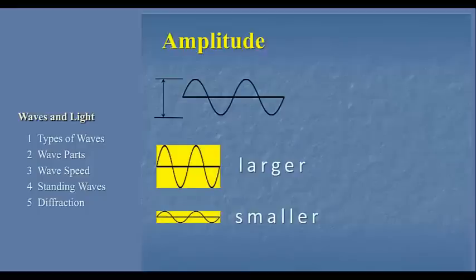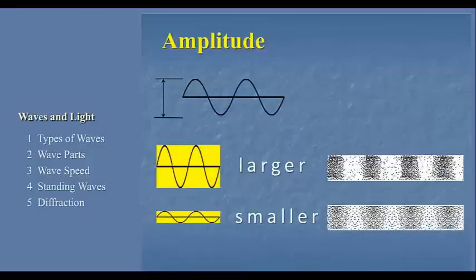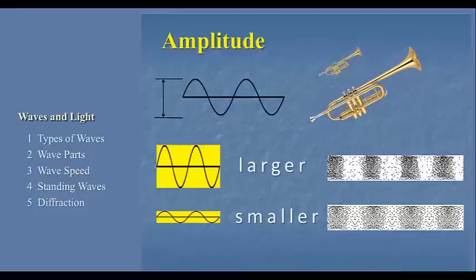For a compression wave, the amplitude is indicated by how densely the particles are compacted. For sound, the amplitude is indicated by the volume. Loud. Or soft. And that's really all we need to say about amplitude.